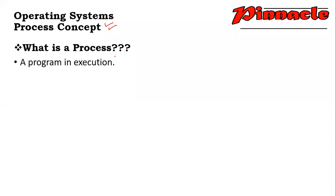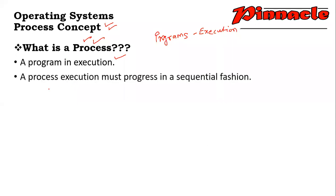A process concept. Tell us what process means — what is a process? A process is a program in execution. That means we have all the programs in your system; when all programs are in execution mode, they can be called a process. A process execution must progress in a sequential fashion.